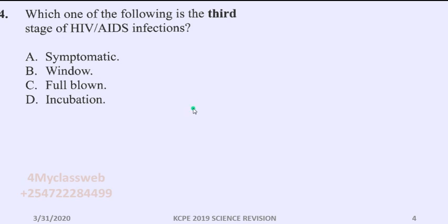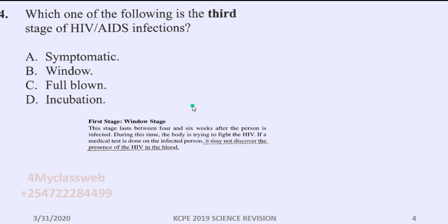Looking at the first stage, which we call the window stage — this stage lasts between four and six weeks after the person is infected. During this time the body is trying to fight the HIV. If a medical test is done on the infected person, it may not discover the presence of HIV in the blood. The test will not show any presence of HIV in the blood.